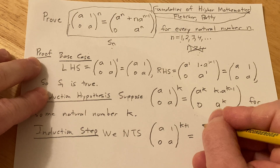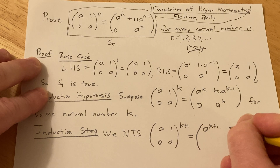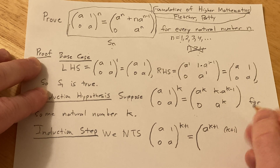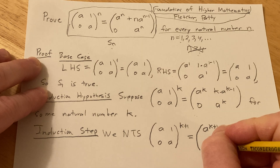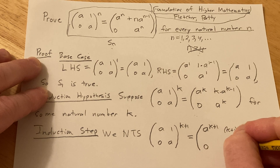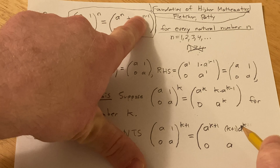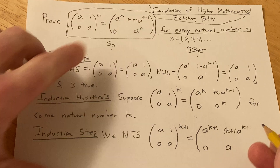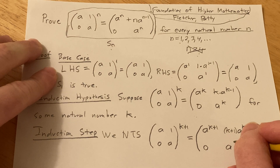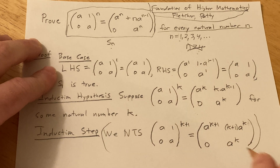So this is k plus 1 here. And I put k plus 1 here, here, and here, where all the n's are. So when n is replaced by k plus 1, the n minus 1 term becomes k plus 1 minus 1, which is k. So we need to show that the matrix A, 1, 0, A raised to the k plus 1 equals the matrix A to the k plus 1, k plus 1 times A to the k, 0, A to the k plus 1. This is what we need to show — this is not yet part of the proof, just the target.